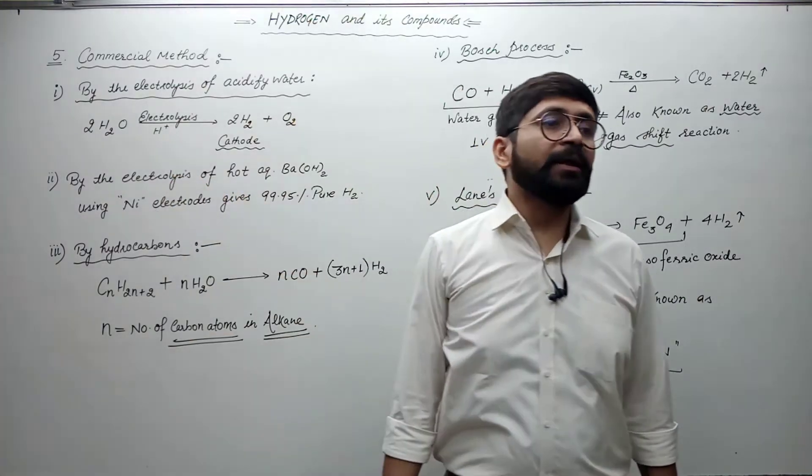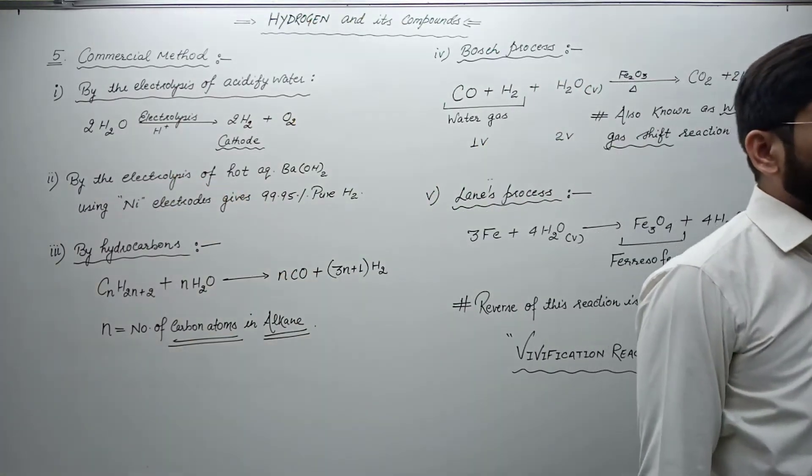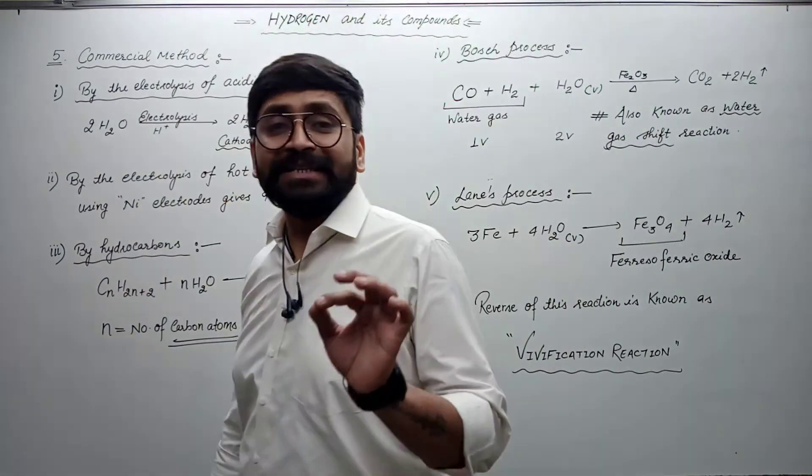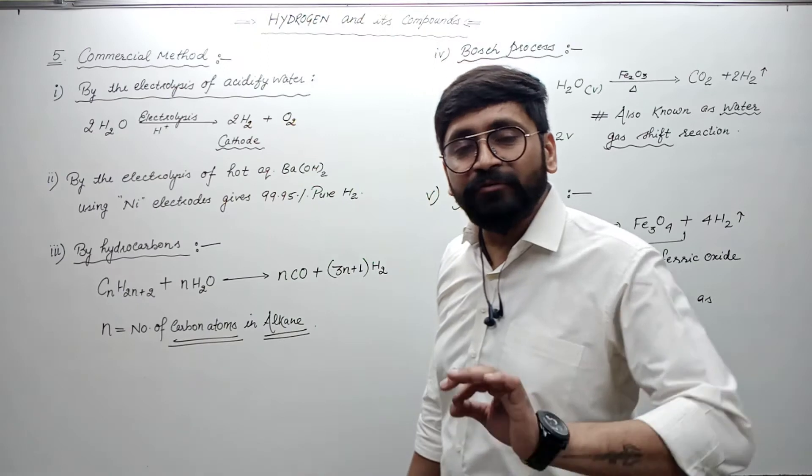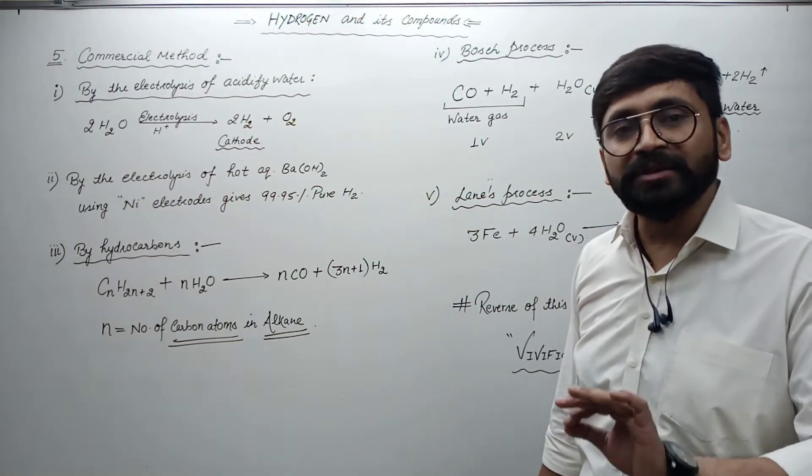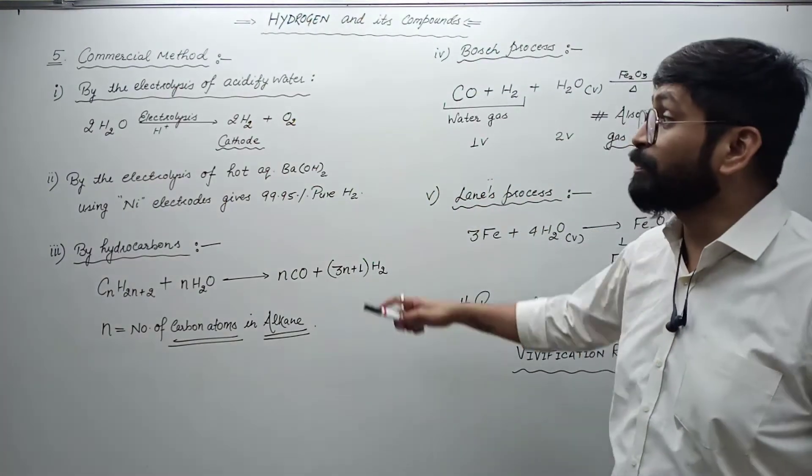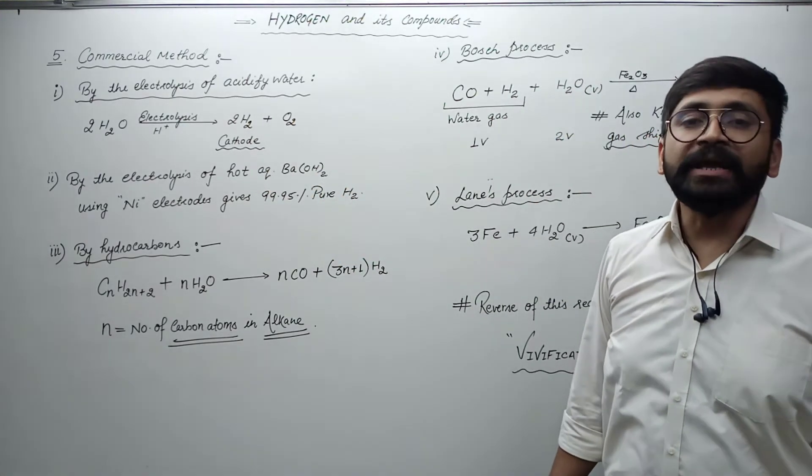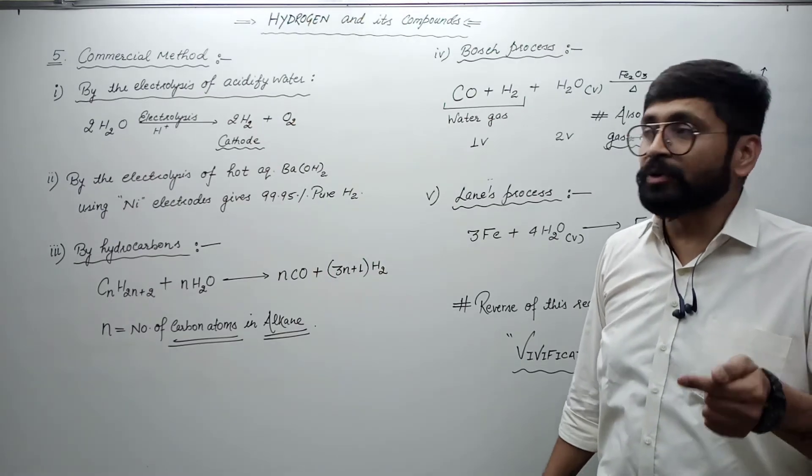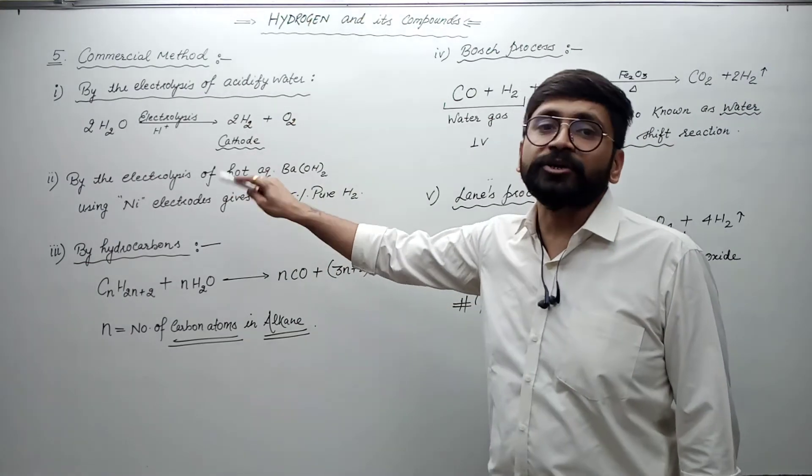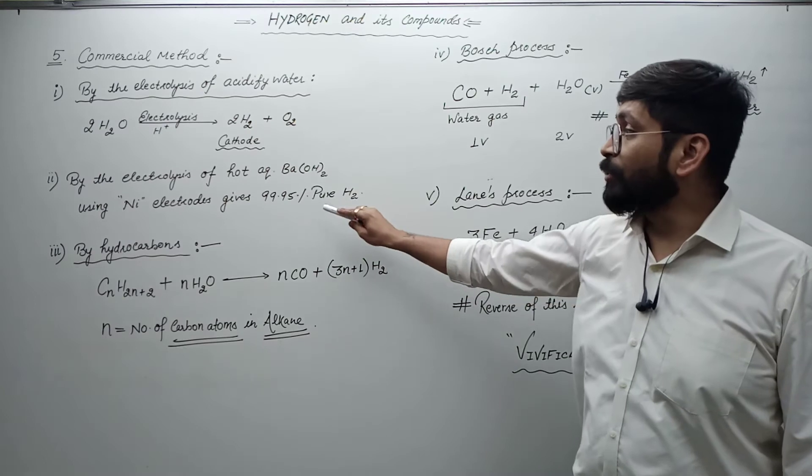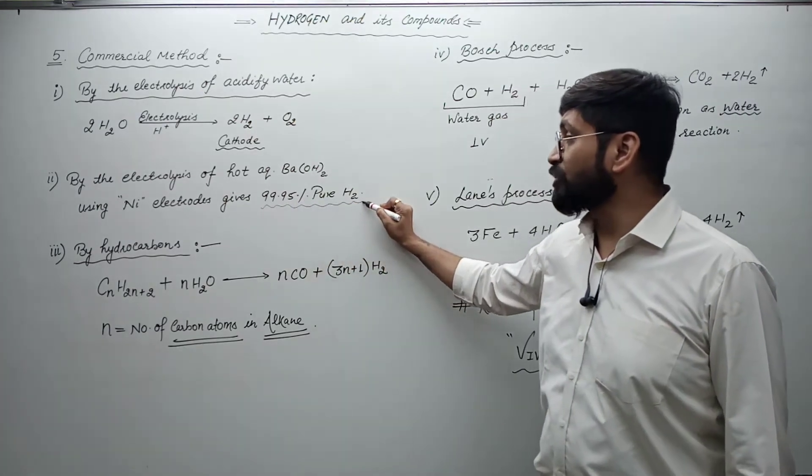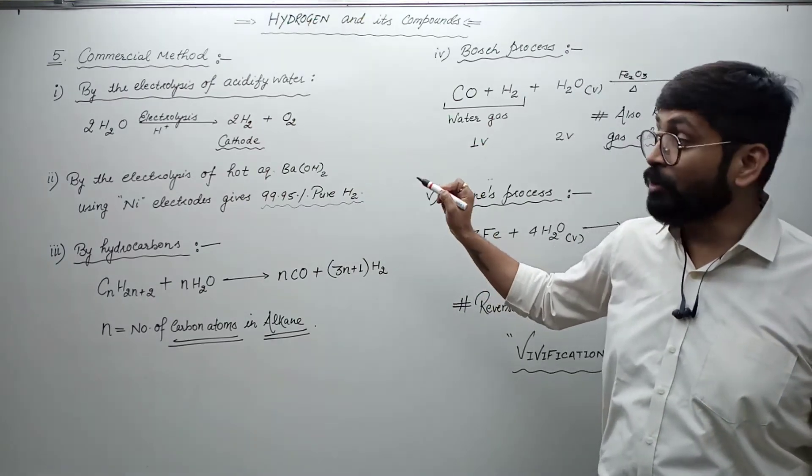The next reaction is very pure hydrogen, 99.95% pure hydrogen. How can you do this? This question is also asked in the exam. The answer is you will do electrolysis of hot aqueous barium hydroxide, Ba(OH)2, using nickel electrodes. You will get 99.95% pure hydrogen gas. Keep your attention to it.